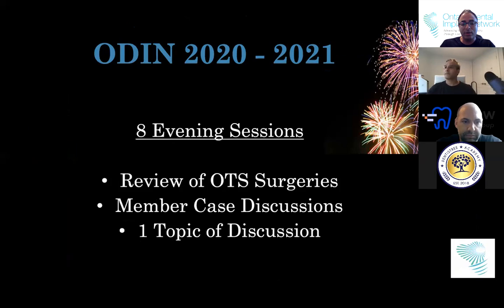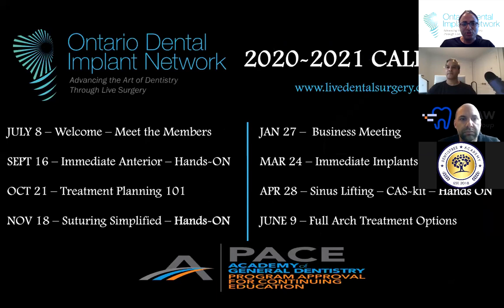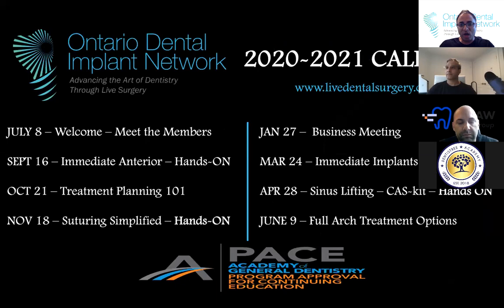A lot of people have been asking about the new year and new session. This year we're going to include an extra meeting — instead of our regular seven meetings a year, there will be eight, always on Wednesday evenings, normally at the Hi-Austin Training Facility in Markham. The new year calendar starts July 8th, pending guidelines. We'll have a welcome meet-and-greet and various topics — we surveyed our members on what they wanted to hear about, and I think we've covered everything.